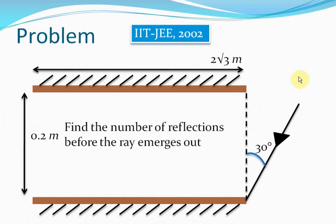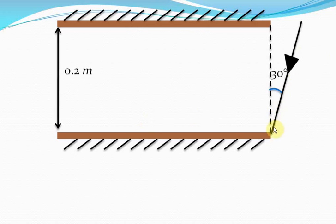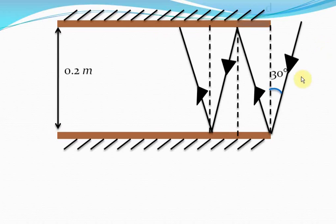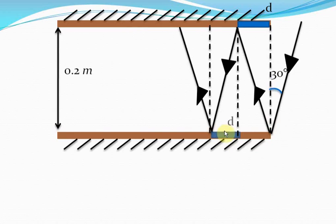Let's see how we will do it. This ray is incident on this mirror here, so it will get reflected like this, and it will keep getting reflected until it moves out of these mirrors. Now, if you look at the distance between the normal and this first reflection, let's assume that this distance is D. Since the angle of incidence is equal to the angle of reflection, this distance will also be D.